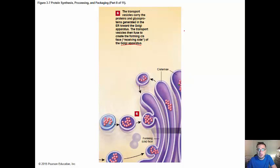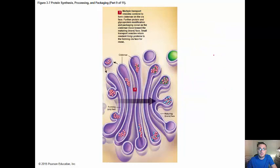So keep in mind, we started in the nucleus and we've moved to the ribosomes using the endoplasmic reticulum. And now we're on to the Golgi body or Golgi apparatus. Multiple transport vesicles combine to form the cisternae or the cis face. Further protein and glycoprotein modification and packaging occur as the cisternae move towards the maturing or the trans or the back face. Small transport vesicles return resident Golgi proteins to the forming cis face for reuse. So these proteins can be reused.